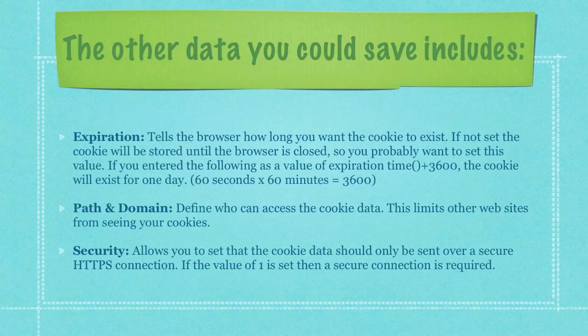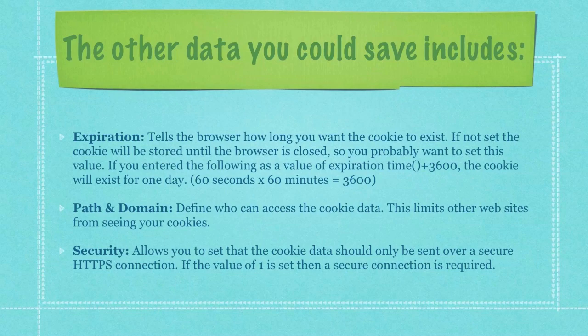Expiration tells the browser how long you want the cookie to exist. If not set, the cookie will be stored until the browser is closed, so you probably want to set this value. If you enter time() plus 3600 as the expiration value, the cookie will exist for exactly one day — 60 seconds times 60 minutes. Path and domain define who can access the cookie data, limiting other websites from seeing your cookies. Security allows you to set that the cookie data should only be sent over a secure HTTPS connection. If the value of one is set, then a secure connection is required.